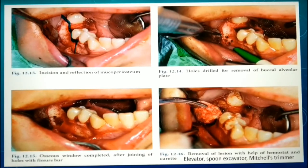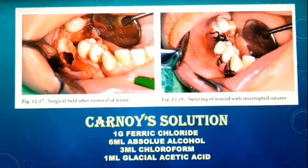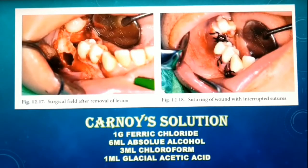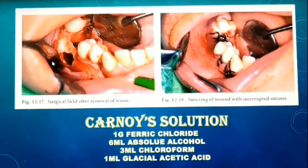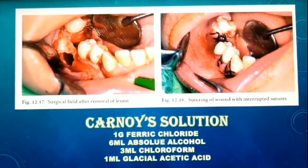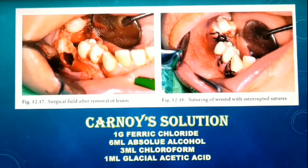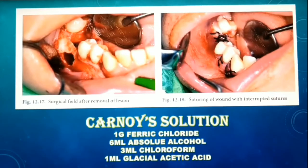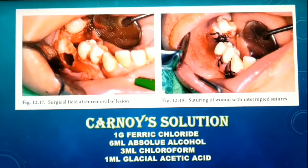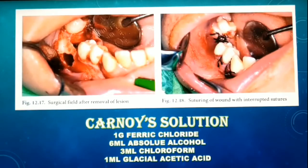After the cyst has been removed in toto, the teeth that are required to be removed are extracted and apicectomy is performed for any endodontically restored teeth. The cavity is first irrigated using saline and betadine, debrided, and inspected for any remnants of cystic lining. Make sure no remnants of cystic lining are left within the cavity. The irregular bone margins are smoothened and hemostasis is achieved before closing.